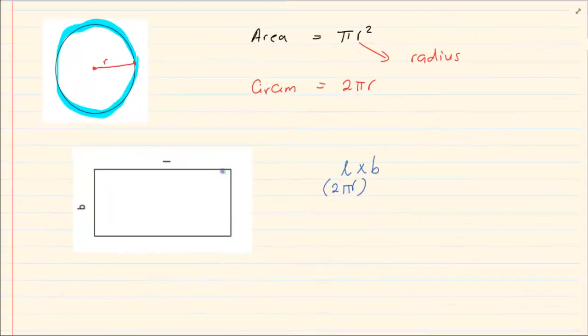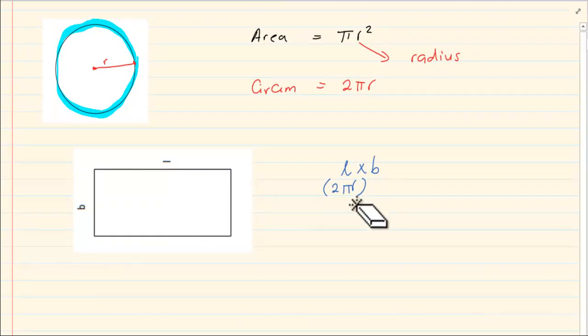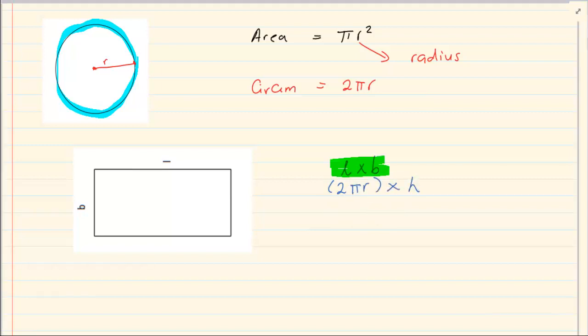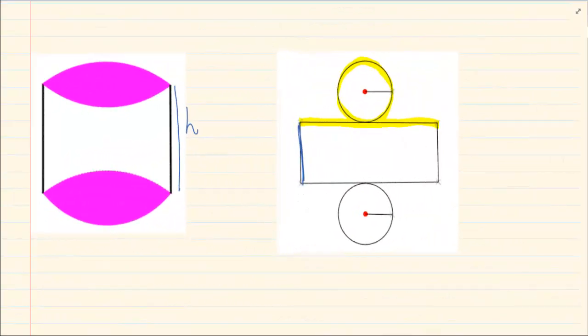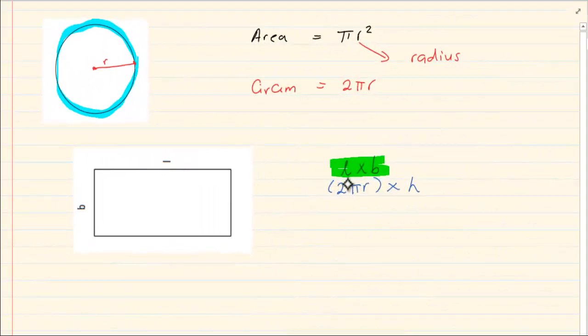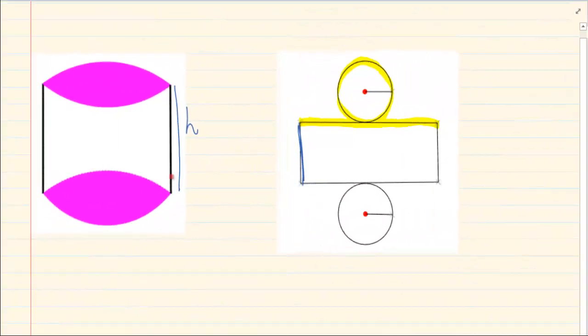Instead of saying length times breadth, we say 2 pi r times height. So instead of using length times breadth, we are going to use the circumference which is 2 pi r and then we are going to use the height.